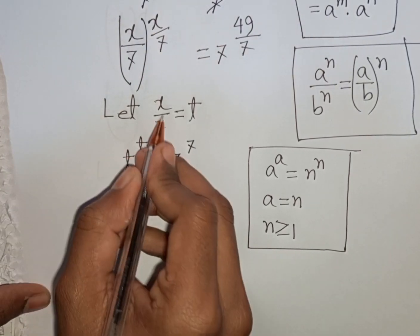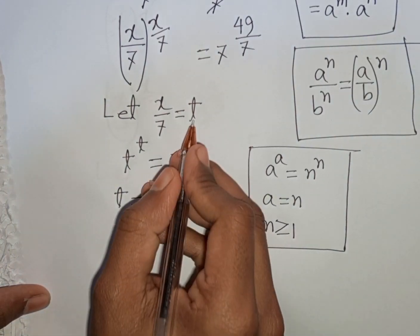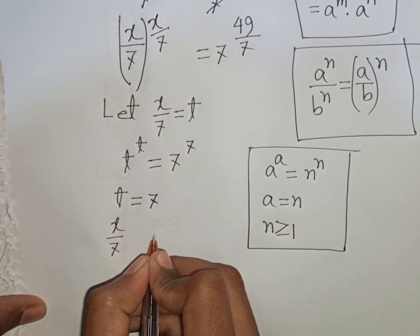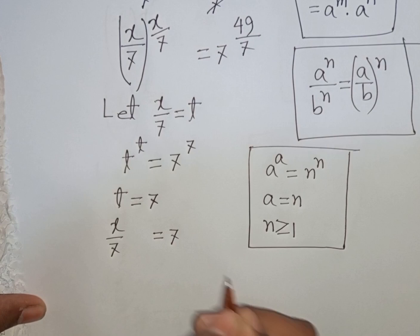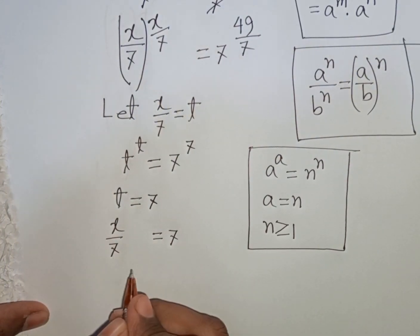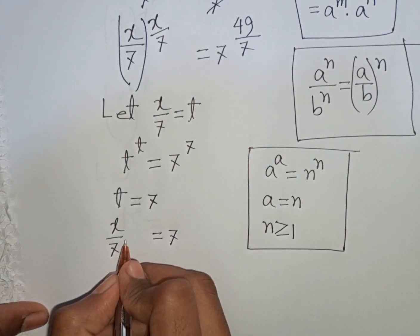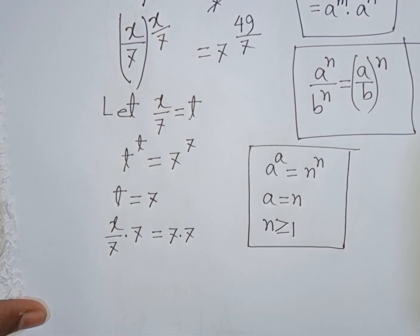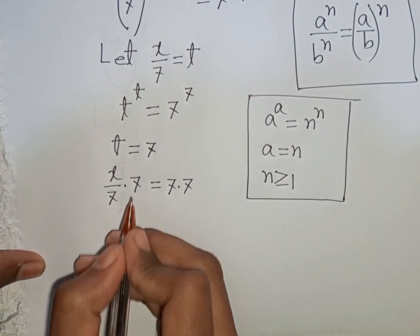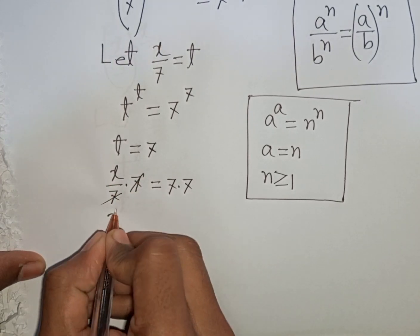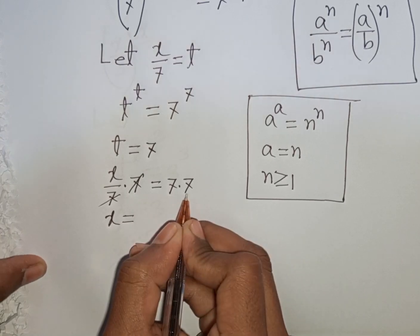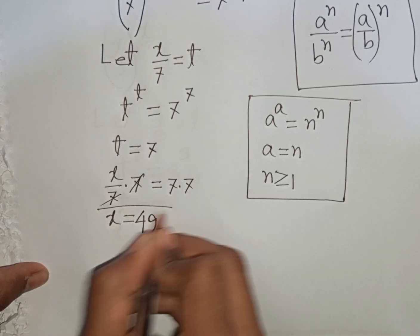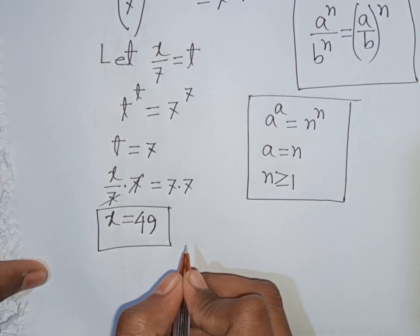Remember that t = x/7, so x/7 = 7. We need the value of x, so we multiply both sides by 7. This 7 and this 7 cancel, giving x = 7 times 7.